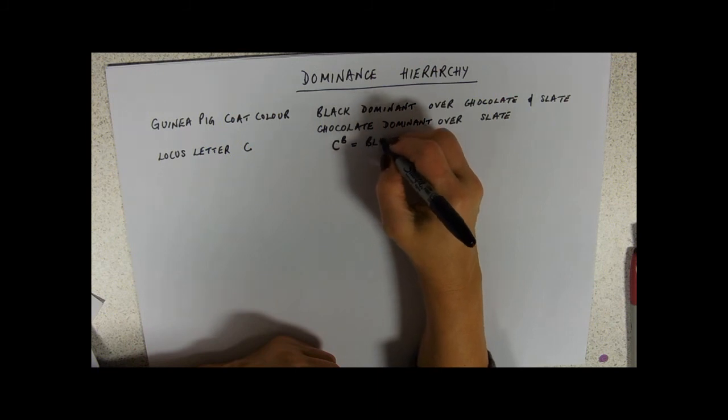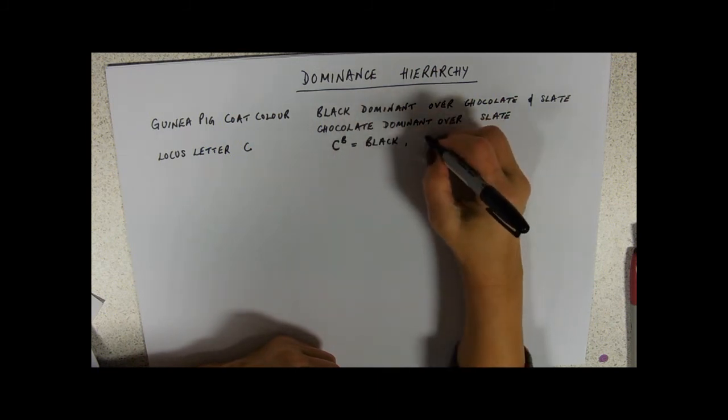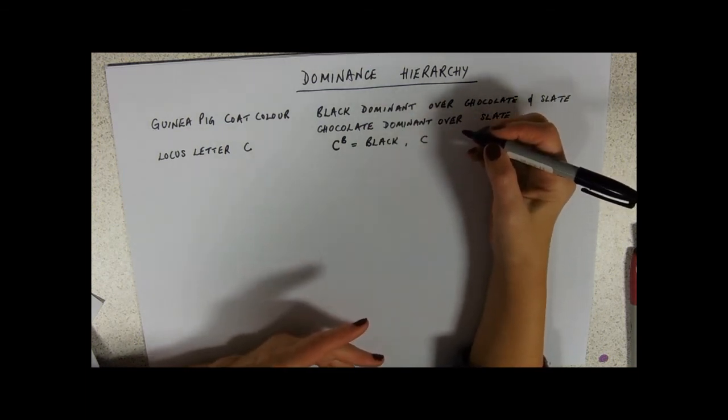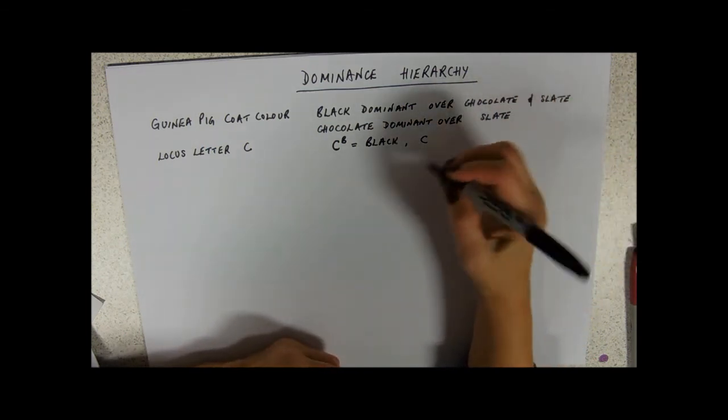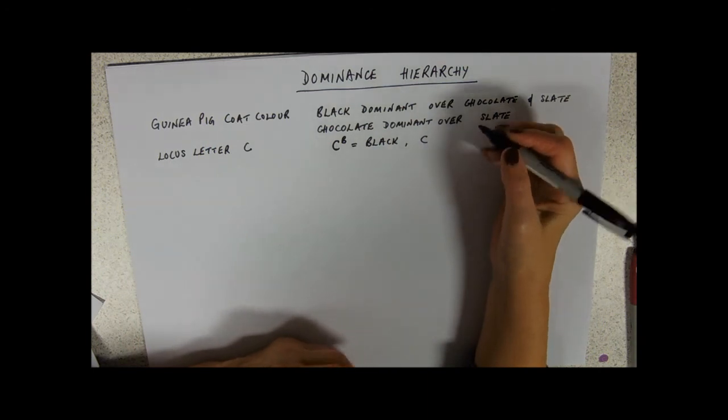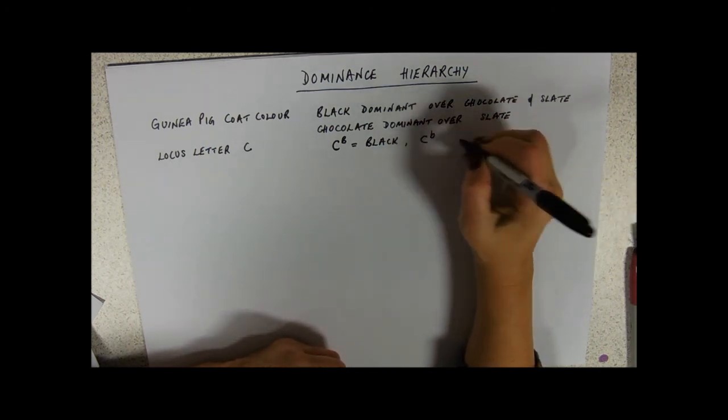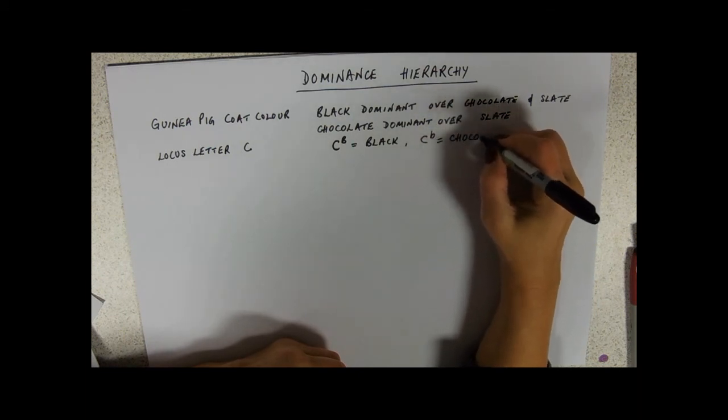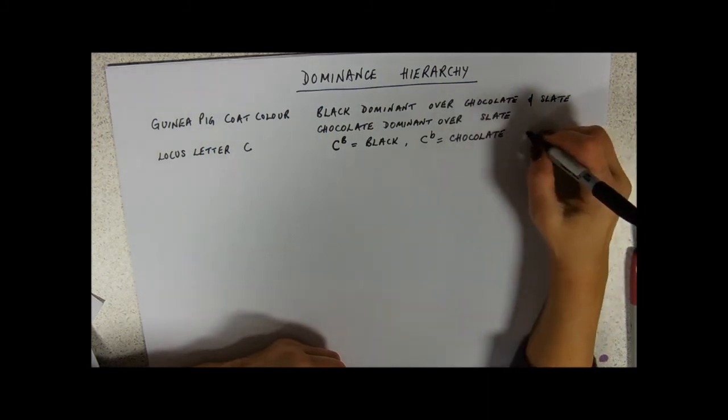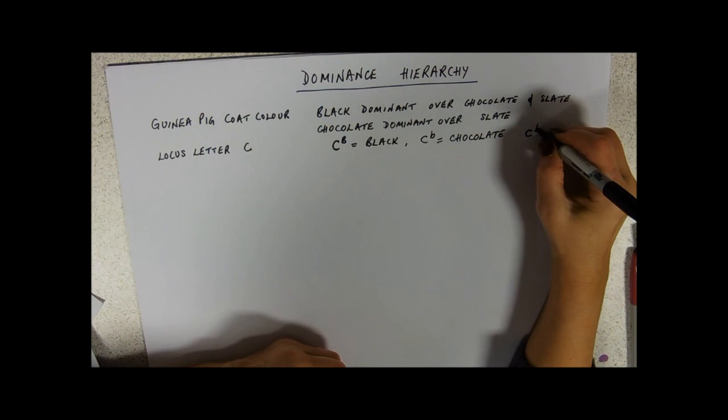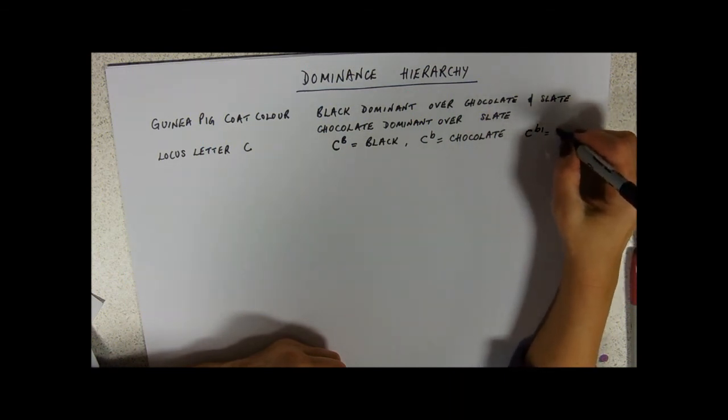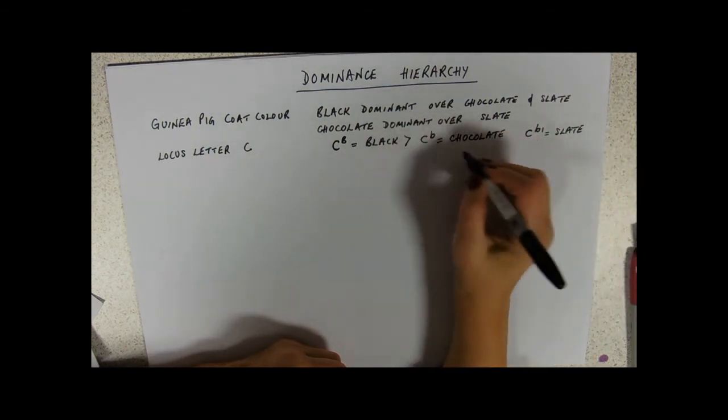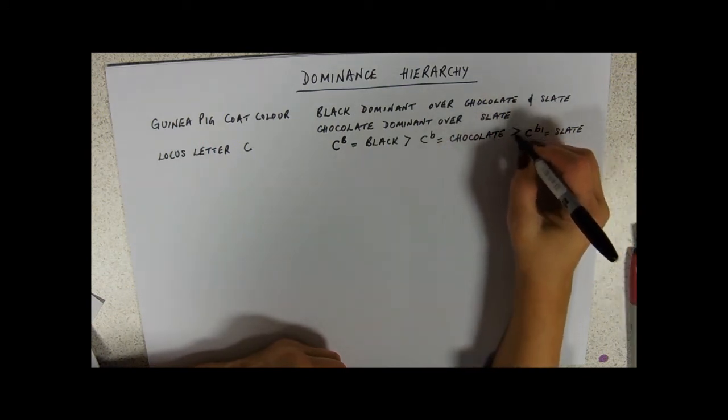C. Now this could be a small letter, maybe, because it's recessive. Or I could give it a different letter. So I'm going to give it a little B for chocolate. And this one's also recessive. I'm going to call this B1, little B1 for slate. And so our dominant hierarchy is black is dominant over chocolate, and chocolate is dominant over slate.